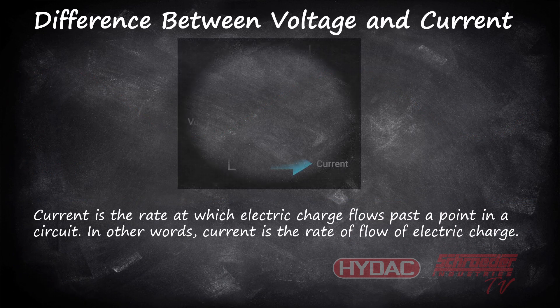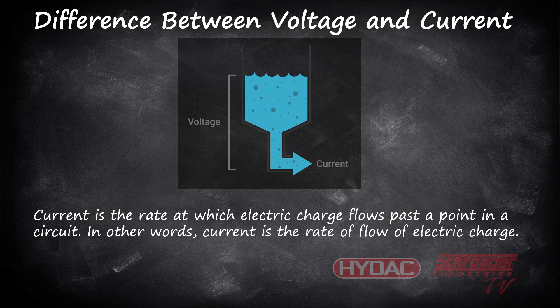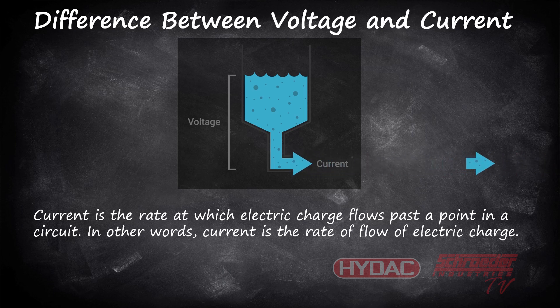Now let's dive a little deeper into the differences between voltage and current. Current is the rate at which electric charge flows past a point in a circuit, and it is an important quantity in electric circuits. Current flows through a circuit when a voltage is placed across two points of a conductor. Current is often referred to in terms of flow, just like the flow of a liquid through a hollow pipe. Simply put, in electrical circuits, the current is the flow of electrons.